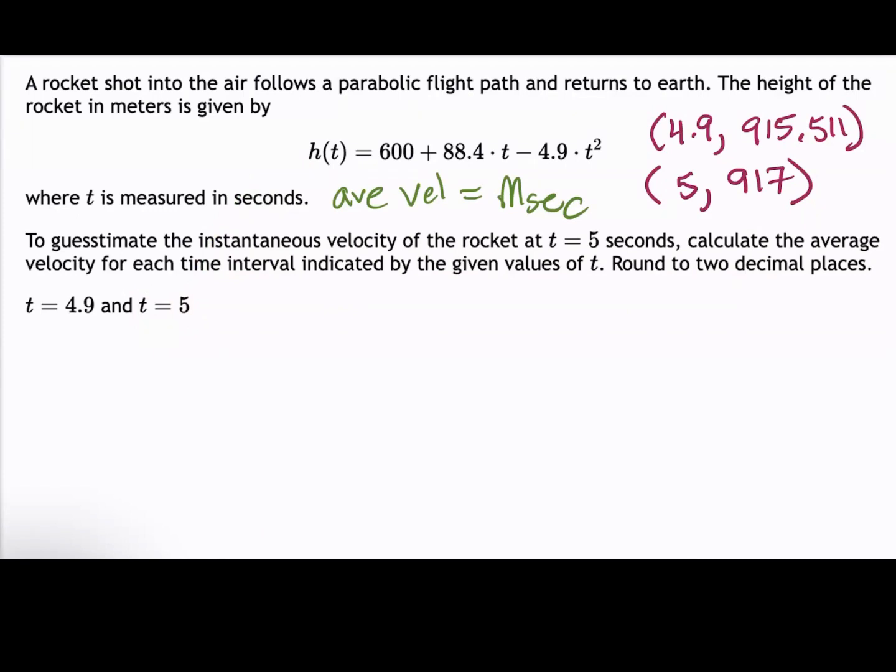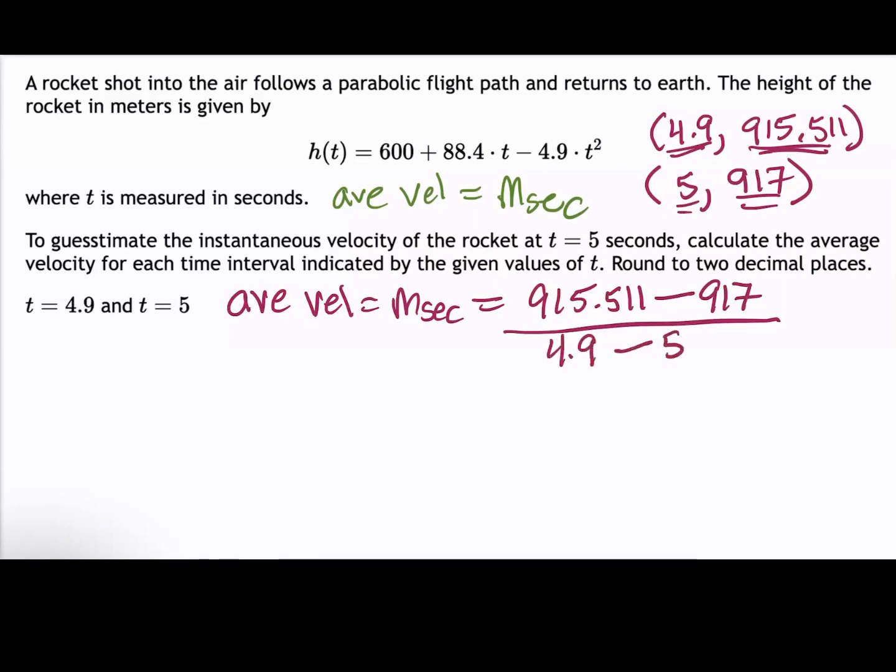Now to calculate the average velocity, we simply calculate the slope of the secant line through these two points. So we have the average velocity, which is also m secant, is (915.511 - 917) / (4.9 - 5). And performing the arithmetic gives us an average velocity of 20.